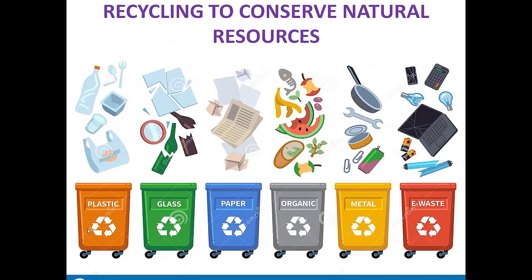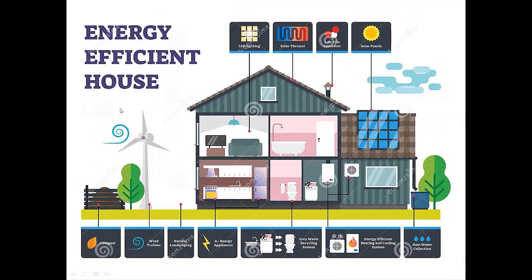Recycling involves the collection of plastic, glass, paper, organic products, metal, and e-waste separately for the purpose of recycling. By recycling we can conserve natural resources. This energy-efficient house has LED lighting, a solar thermal heating system, low carbon dioxide emissions through chimneys, solar panels, rainwater harvesting for recycling, energy-efficient heating and cooling systems, a water recycling system, and a wind turbine — making it an ideal energy-efficient house.